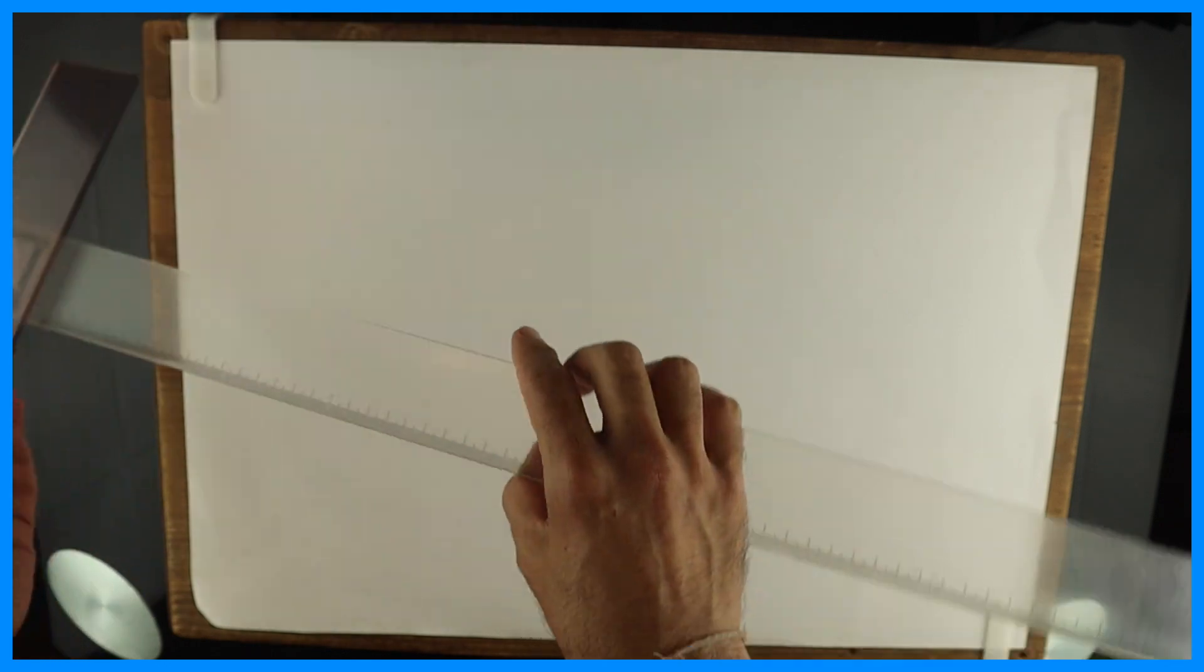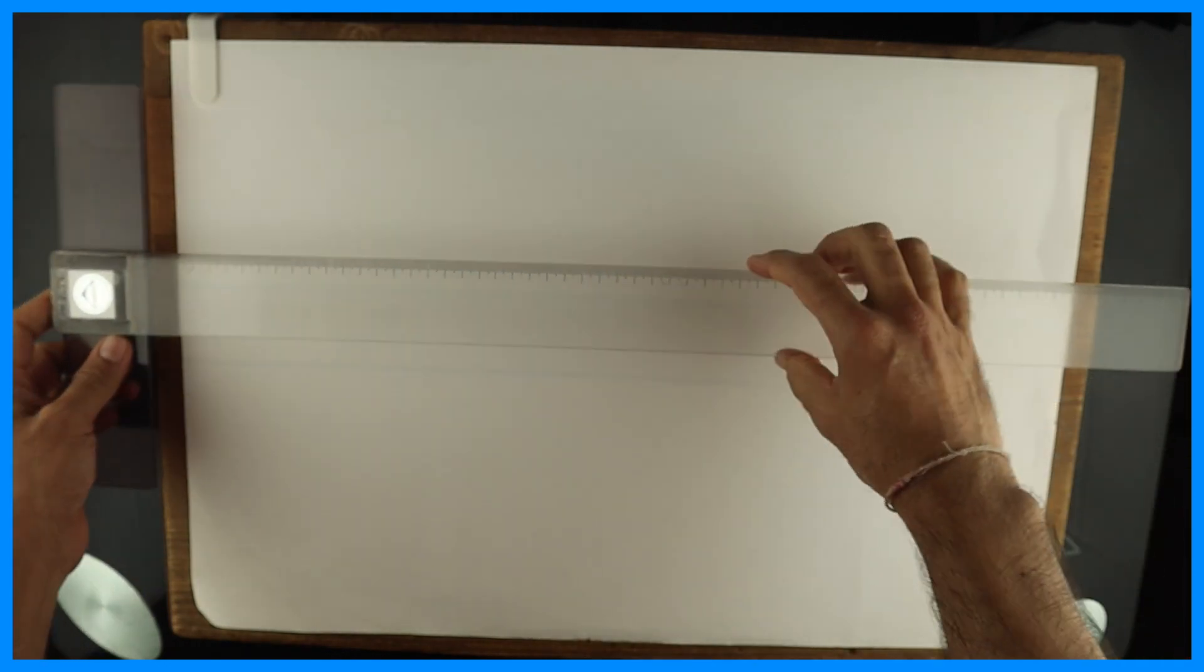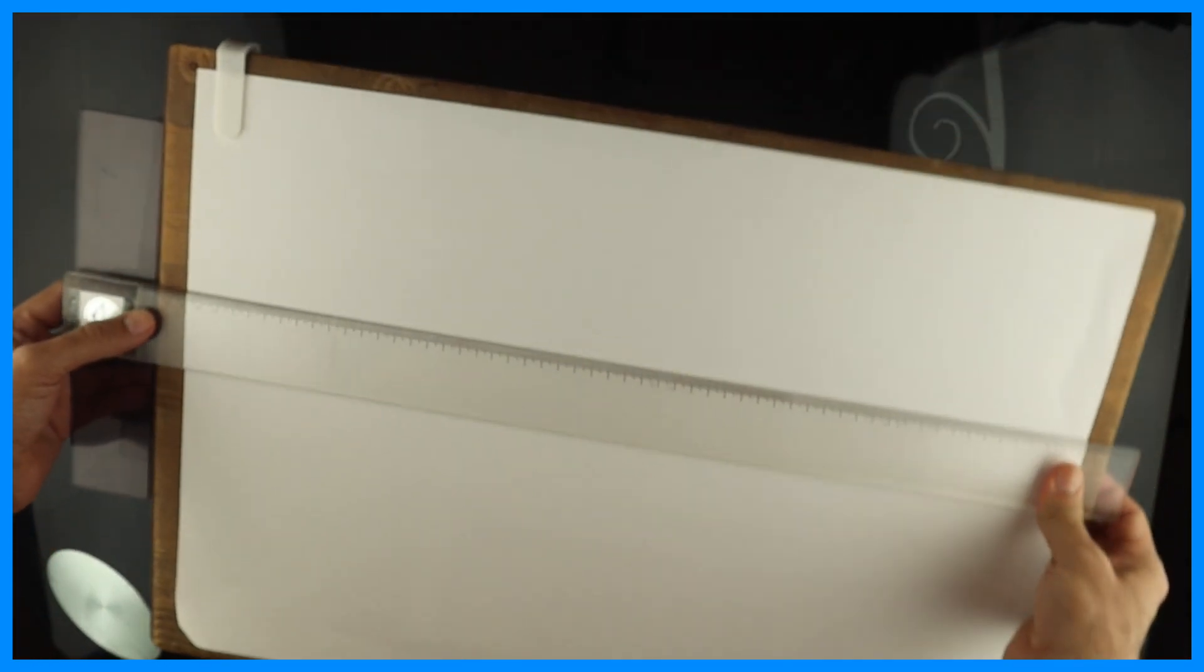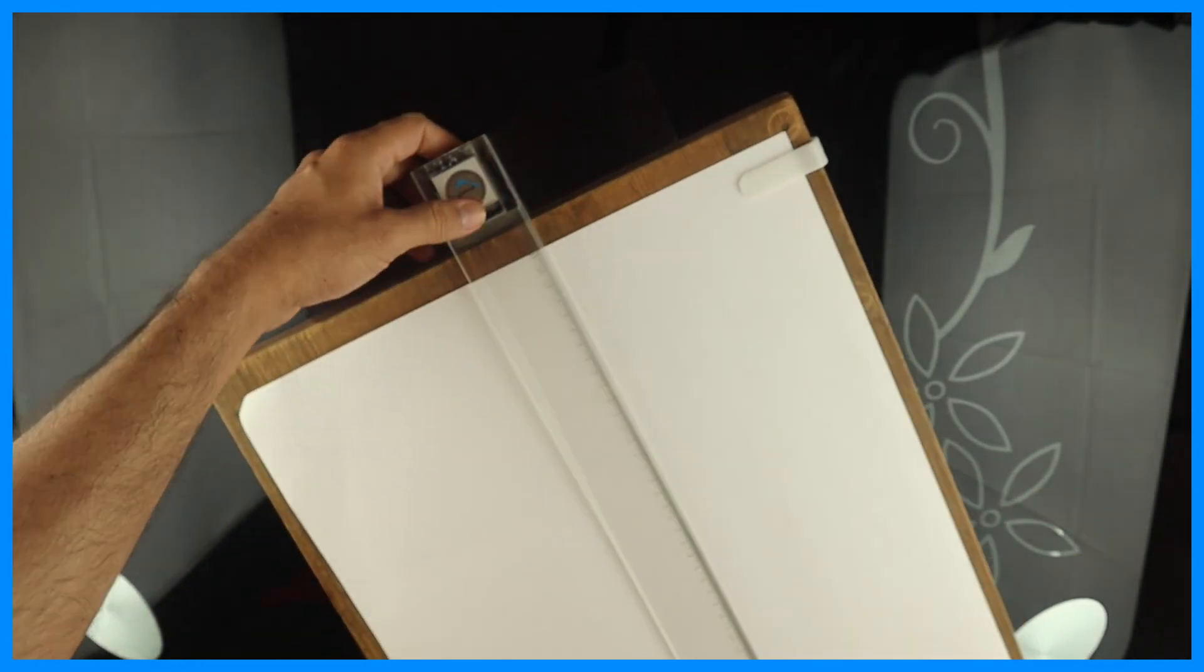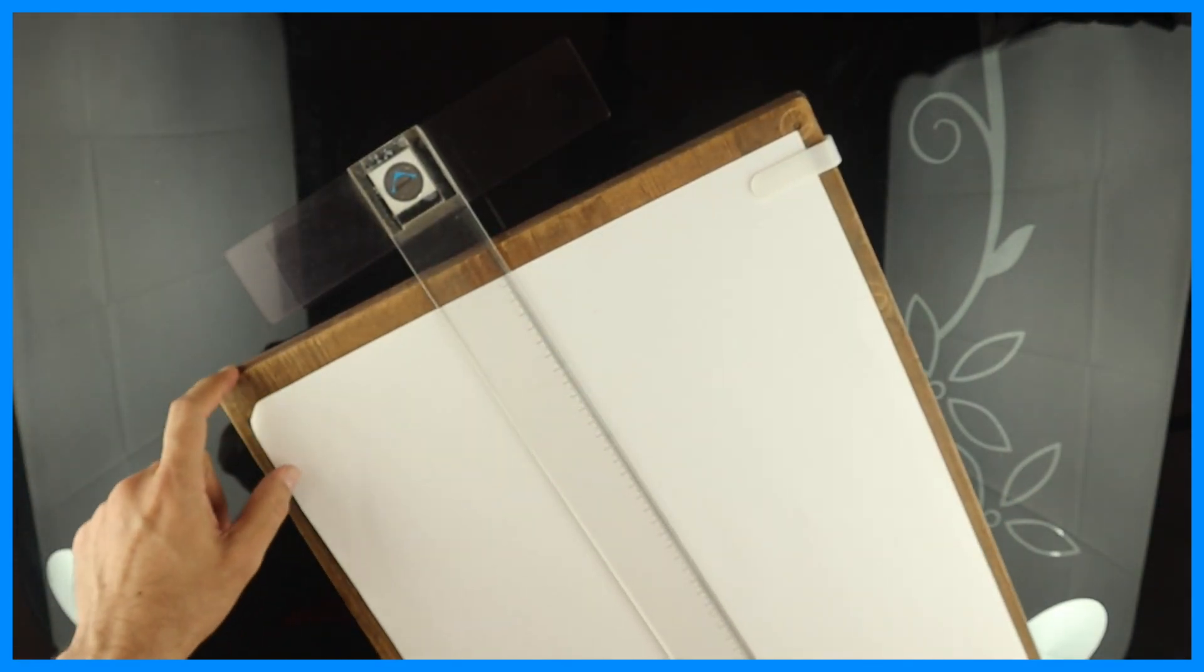Now we have T scale. See this, it is like this. The T scale will slide on that working edge. See, this is the working edge.